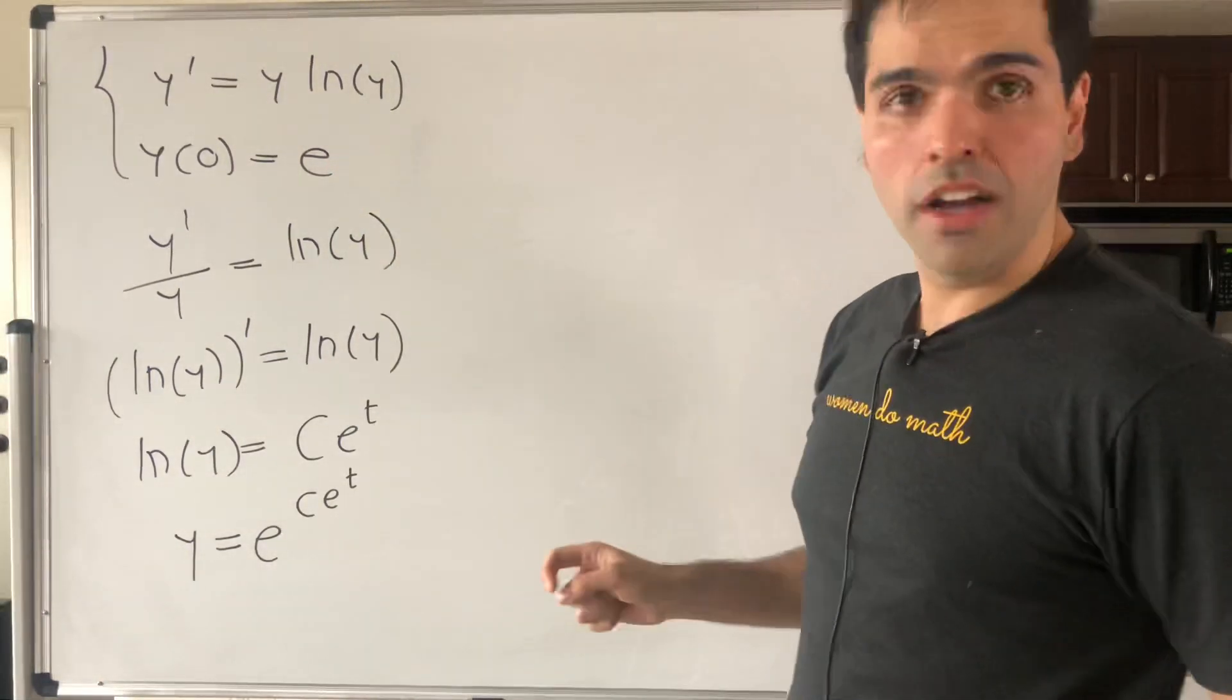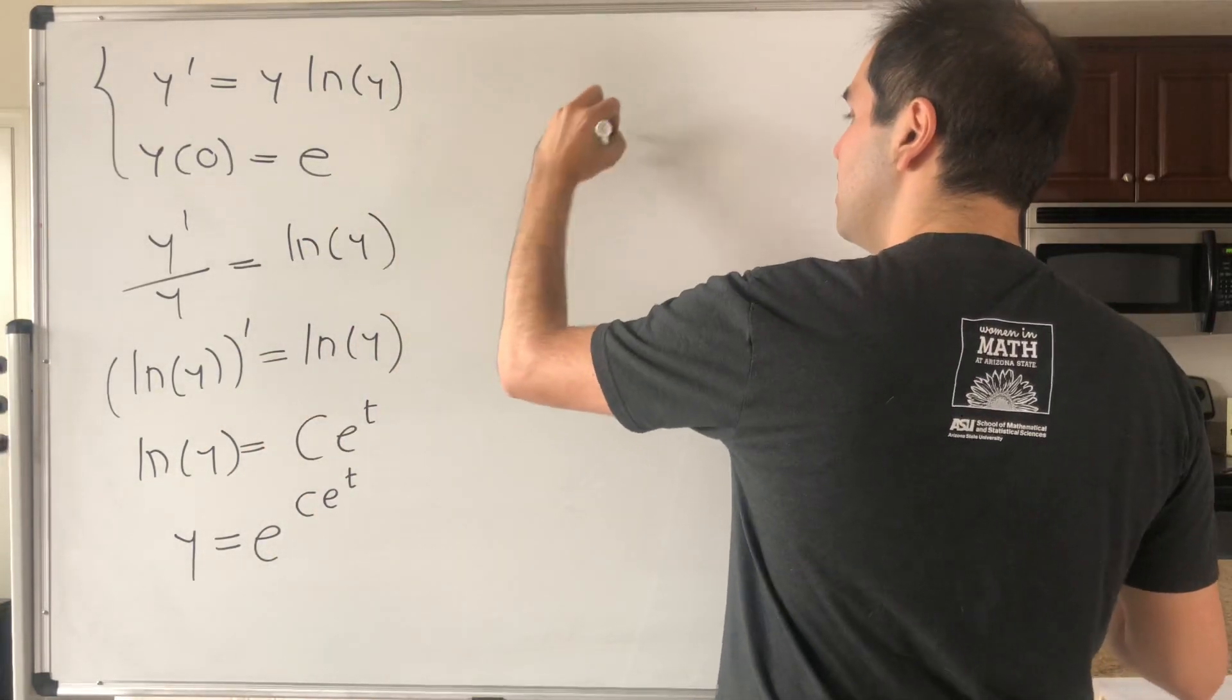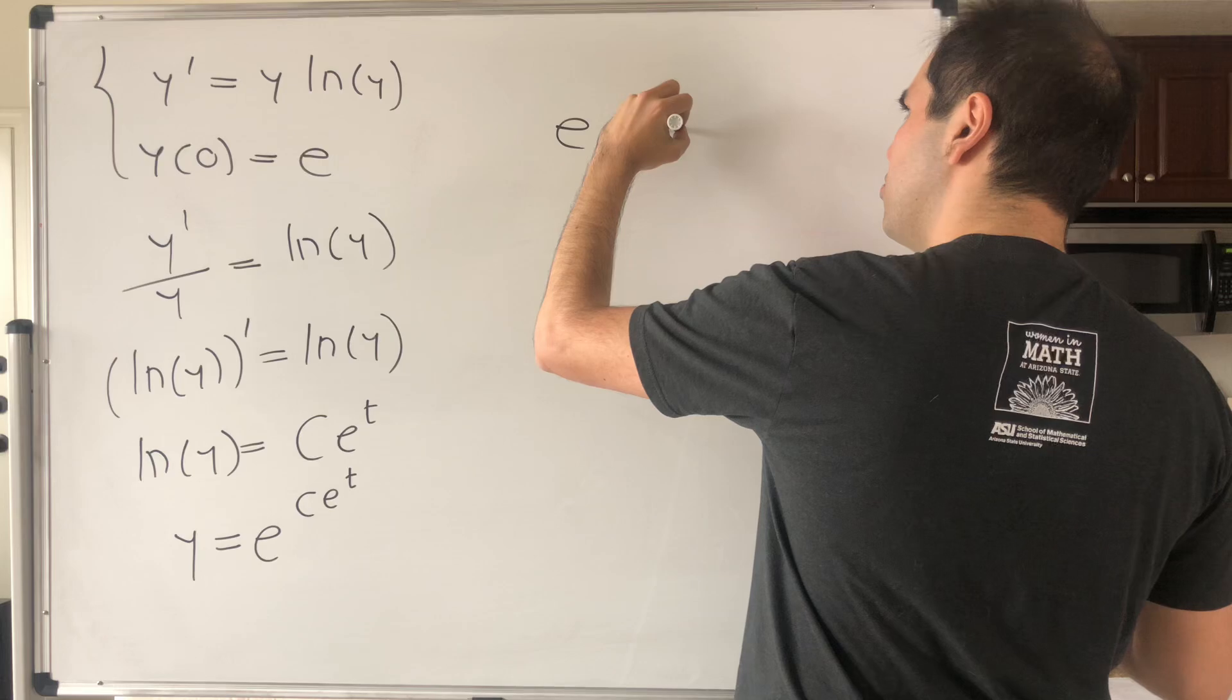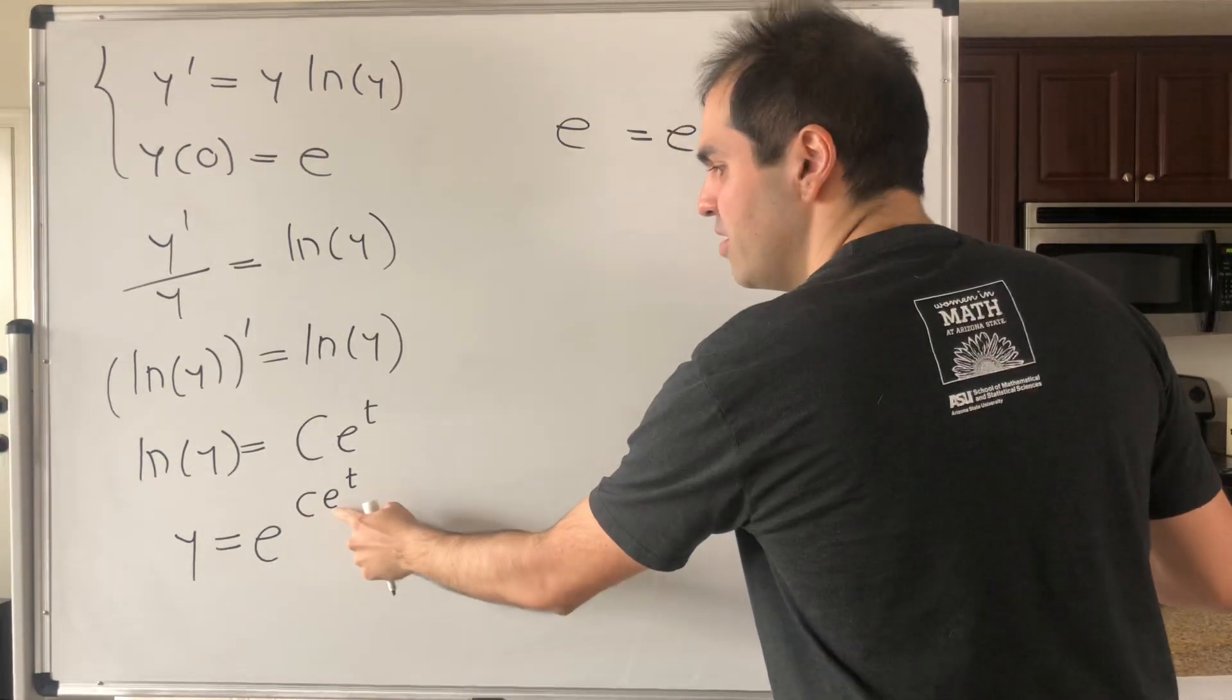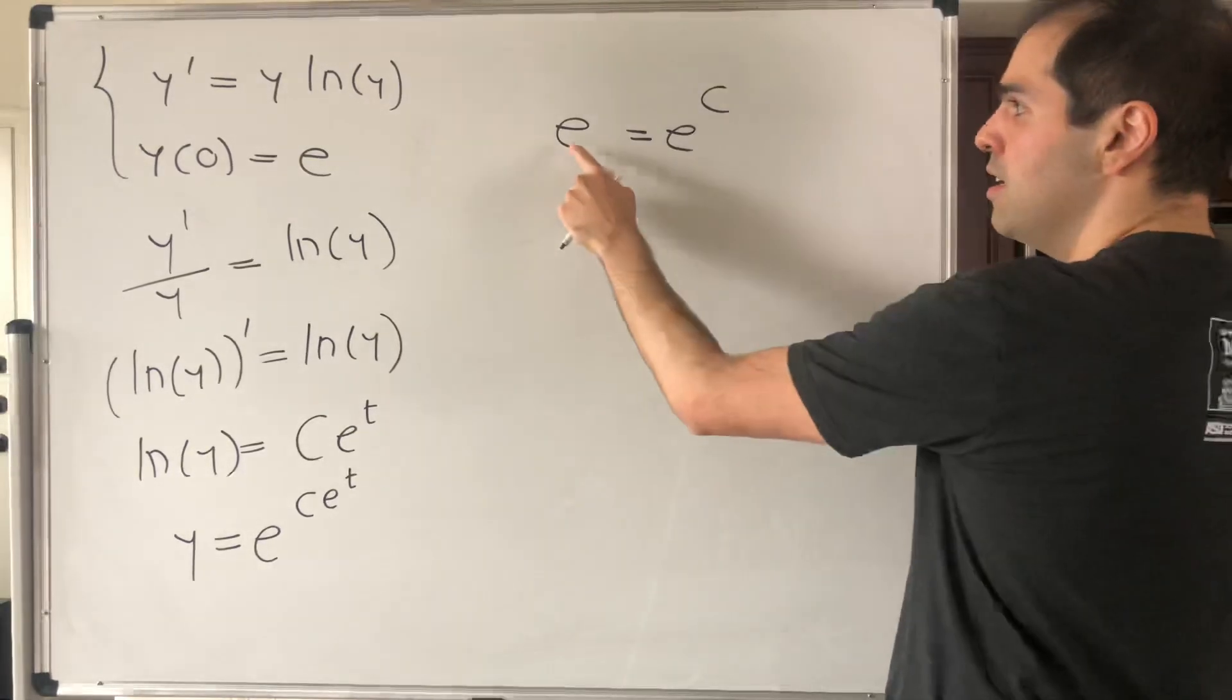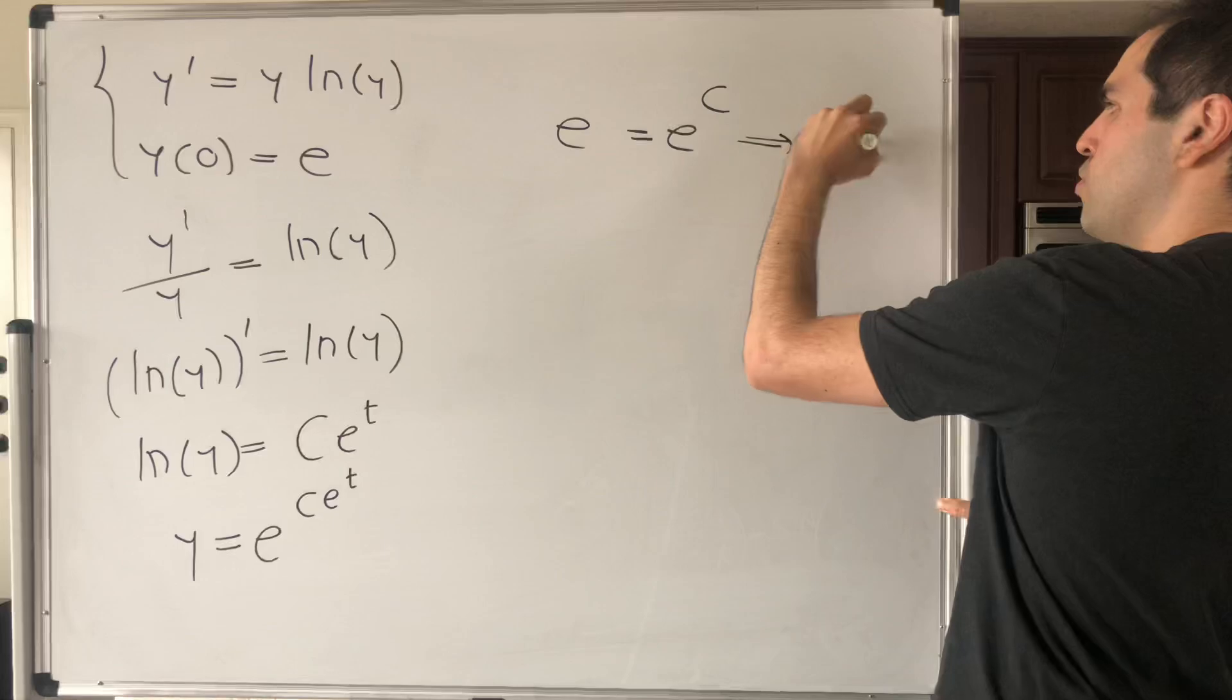And now let's just plug in the initial condition. So y(0) is e, and that becomes e equals e to the (c e to the 0), which is 1. So e equals e to the c, so c equals 1.